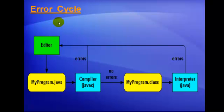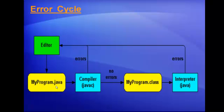Now let us discuss about the error cycle. With the help of the editor we edit the program — the editor is the piece of software which gives us the facility to edit the program. Once our program is edited, we save the program. Suppose we have saved our program and the name of the file is 'myprogram'. When the program is saved, the .java extension is automatically appended along with the name of the file. Once the file is saved, it is forwarded to the compiler.